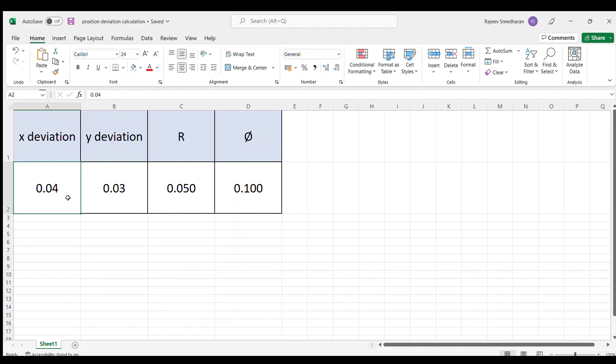So, let us assume that my x-axis is deviated by 0.04 and y-axis is deviated by 0.03. How to calculate the radius, we have already seen the formula.